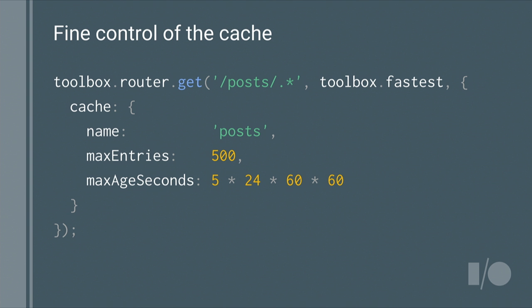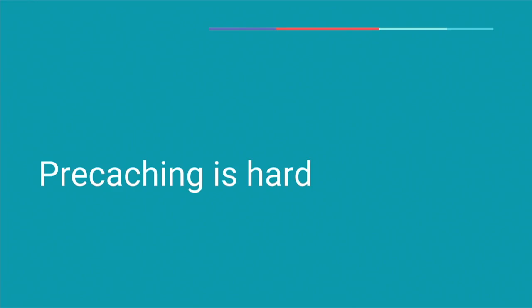You can also get fine control over the cache. Here we've set up a route for posts — blog articles or Google Plus posts. You want to cache them so people can get recently viewed content again, but you don't want to endlessly fill the device as they browse around. So we can set a maximum number of entries — in this case 500 — and a maximum number of seconds that those should be available, set here to five days. But even with all this control, the pre-caching part can be tricky — you need to make sure the service worker changes in order to get a new one installed.